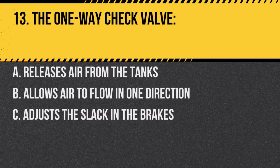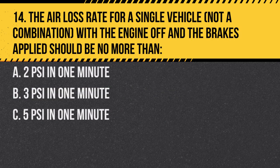Question 13. The one-way check valve: A. Releases air from the tanks. B. Allows air to flow in one direction. C. Adjusts the slack in the brakes. Answer B. Allows air to flow in one direction. It prevents loss of air if the compressor fails.